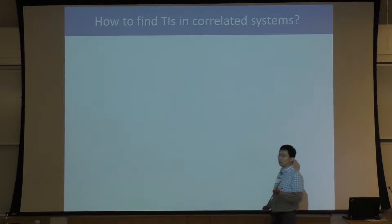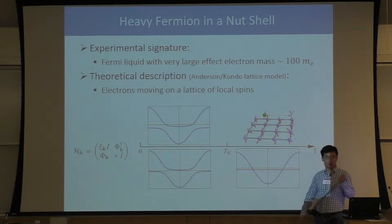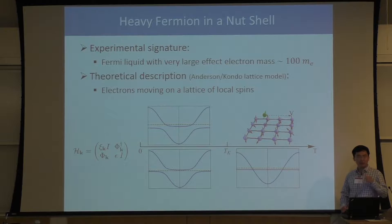Today we will consider a slightly different topic: how and where to find this type of topological insulators in strongly correlated materials. To make life easier, I want to focus on one particular family of strongly correlated materials today, which is the heavy fermion compounds.